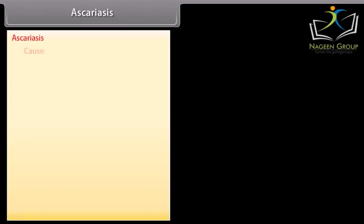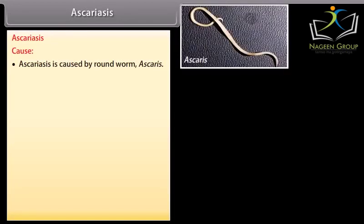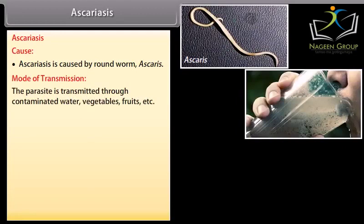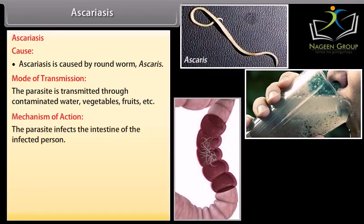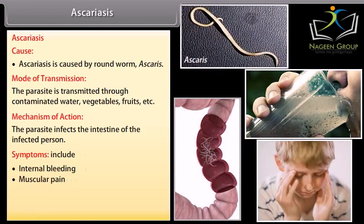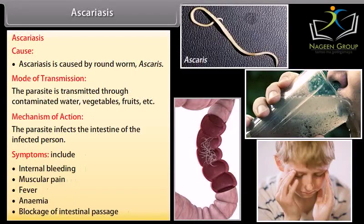Ascariasis is caused by roundworm Ascaris. Mode of transmission: the parasite is transmitted through contaminated water, vegetables, fruits, etc. Mechanism of action: the parasite infects the intestine of the infected person. Symptoms include internal bleeding, muscular pain, fever, anemia, and blockage of intestinal passage.